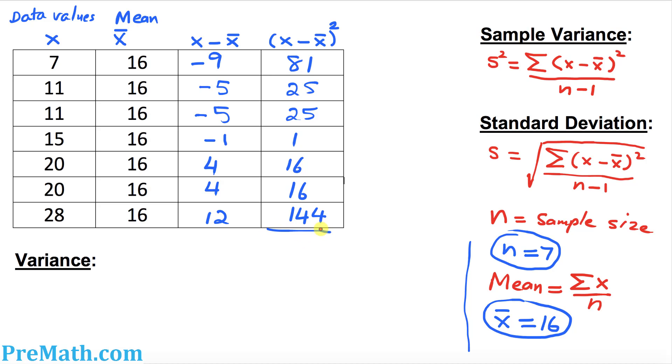Now we're going to add these numbers up under this last column. We will call this summation, sigma notation of x minus x bar squared. That means we are adding them up. Once we add these things up, this turns out to be 308.